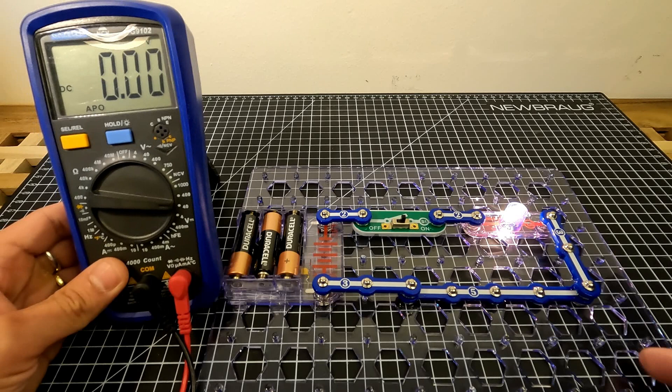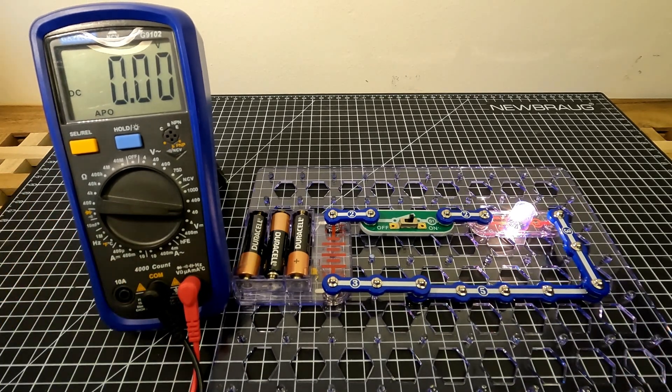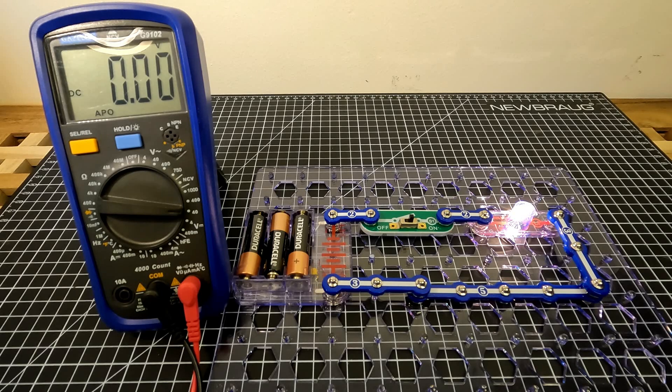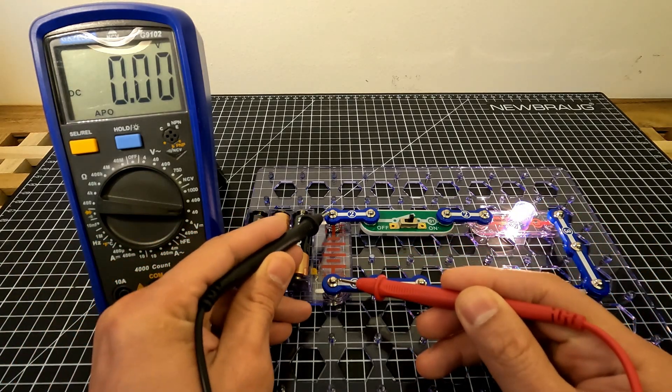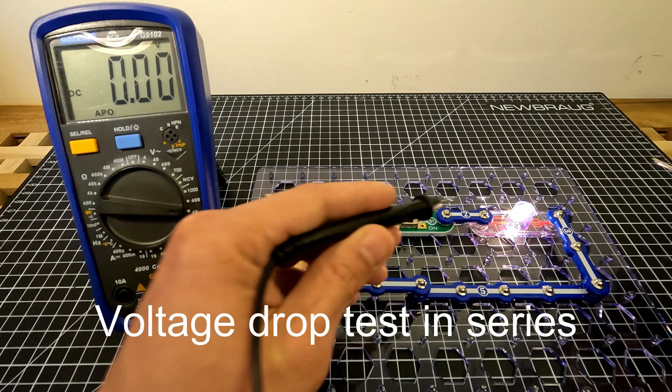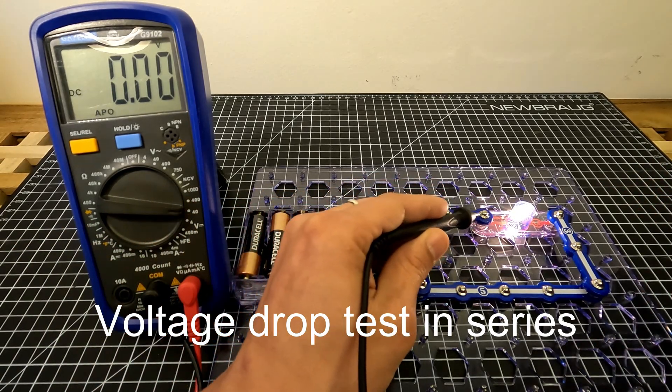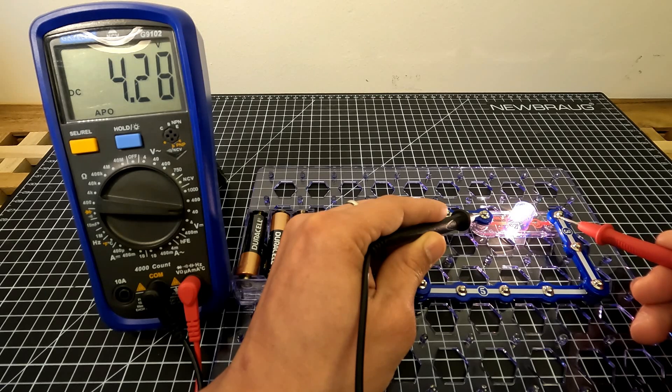We want to set this in voltage and then we want to check from here in the battery. Then we have 4.37 volts. And then from the load, we want to check as well how many. From the load, 4.28. That is what we call voltage drop.